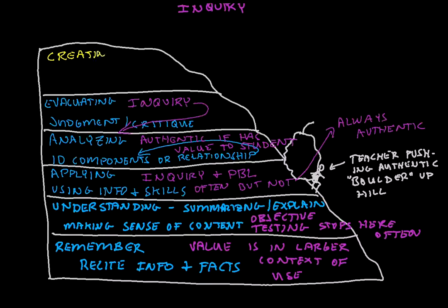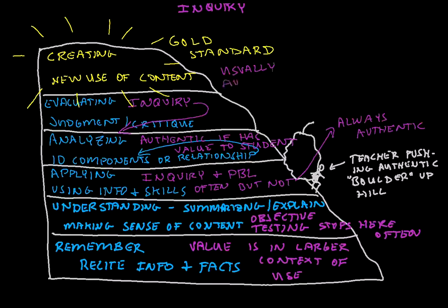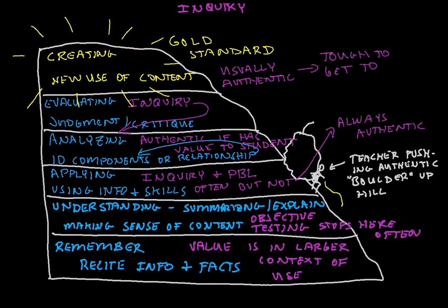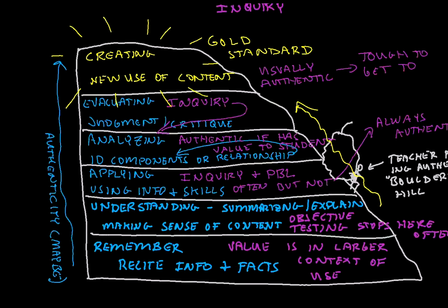And level 6 is creating — using what you've learned to create a unique or new use, or create a whole new idea. I think it might be hard for this to not be authentic, actually. But it's also really difficult to get students to this level. So what we see is that it's hard to push that boulder up the hill, and we also see that moving up the hill doesn't ensure authenticity.